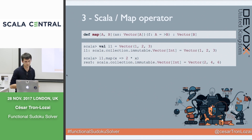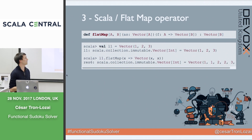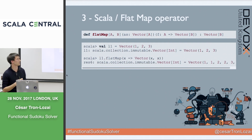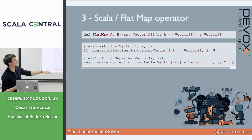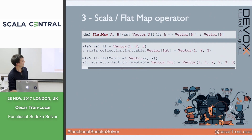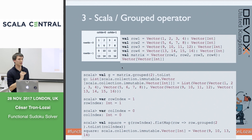Now flatMap: this used to confuse me — what's the difference between map and flatMap? The signature is slightly different: instead of a function from A to B, it takes a function from A to Vector of B. If you just used map you'd get a Vector of Vector, which you don't want. The monad flattening kicks in and you get back a flat vector. So if you pass a function that duplicates elements to Vector(1, 2, 3), instead of a vector of vectors you get Vector(1, 1, 2, 2, 3, 3).